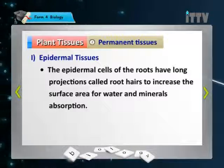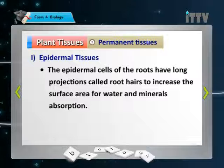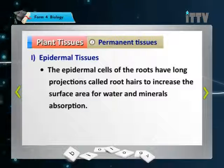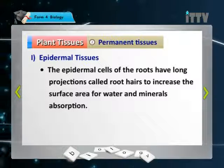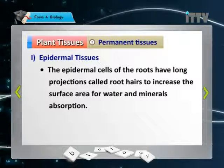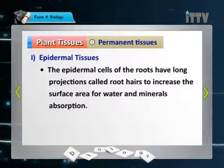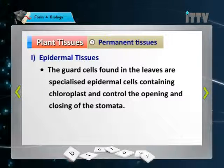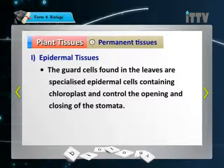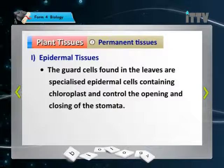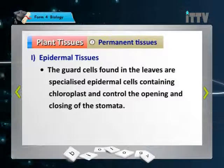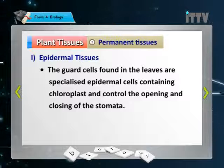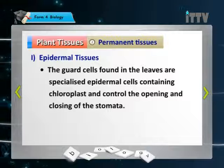The epidermal cells of the roots have long projections called root hairs. This increases the surface area for water and mineral absorption. Guard cells are found in the leaves — they are specialized epidermal cells containing chloroplasts, and they control the opening and closing of the stomata.